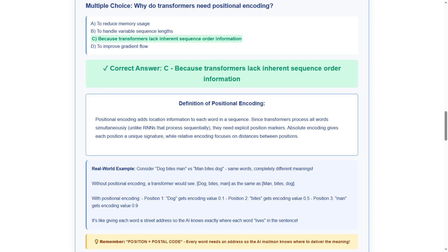Positional encoding adds location information to each word in a sequence. Since transformers process all words simultaneously, unlike RNNs that process sequentially, they need explicit position markers. Absolute encoding gives each position a unique signature, while relative encoding focuses on distances between positions. In summary, it's location information system.